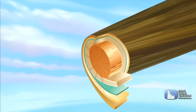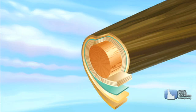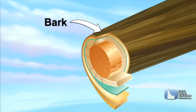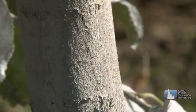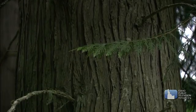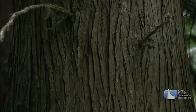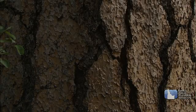The next layer is the cambium. It makes new sapwood and new bark each year, allowing the tree to grow wider. The outside layer is the tree's bark. The outer bark protects and insulates the tree. The inner bark, or phloem, carries sap full of sugar from the leaves to the rest of the tree.